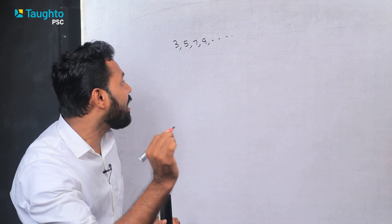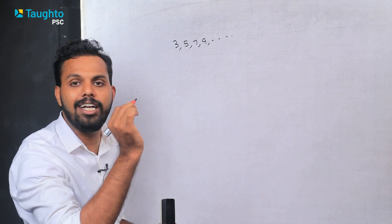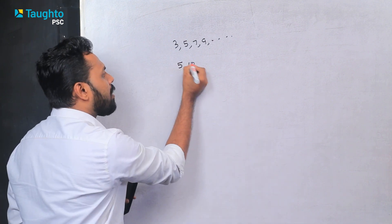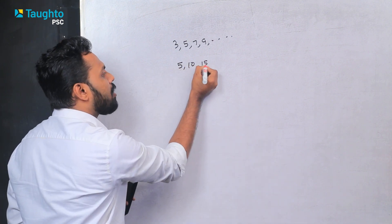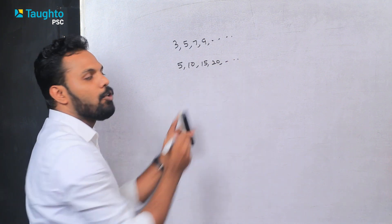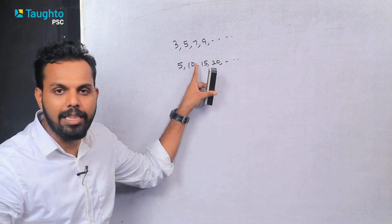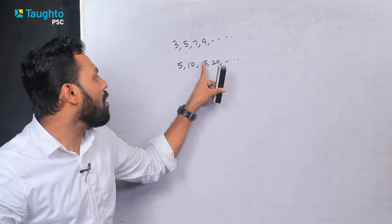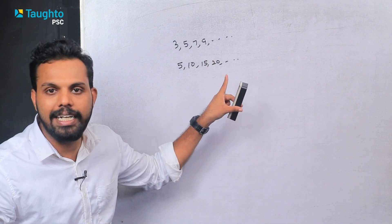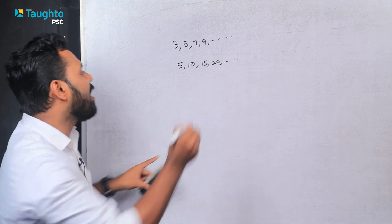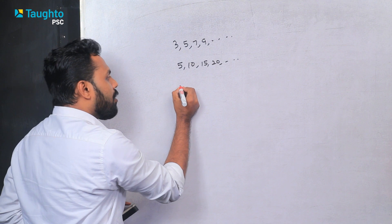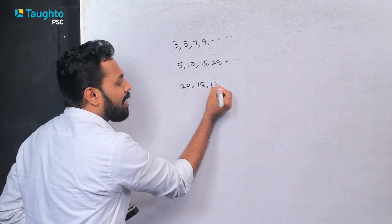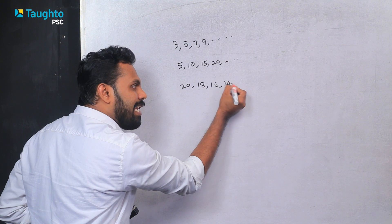Let's talk about sequences. For example: 5, 10, 15, 20, etc. You can also have a sequence like 20, 18, 14, etc.